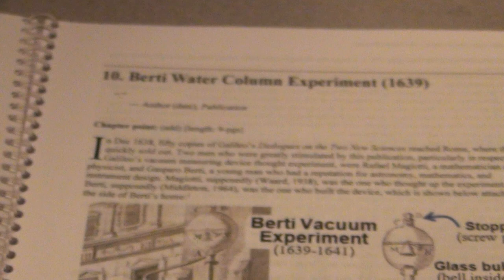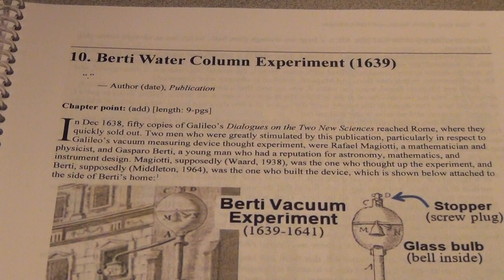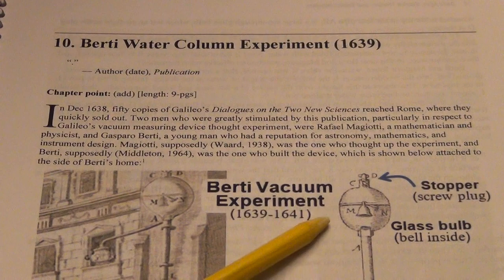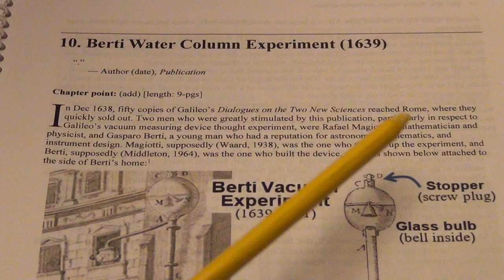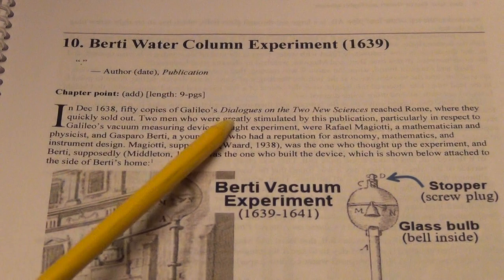Berti read our water, called the vacuum experiment, 1639, in Italy, in Rome. It says 50 copies of Galileo's Dialogues on the two new sciences reached Rome in December of 1638, which was the diagram we just saw. After these 50 copies reached Rome, they started building these experiments.